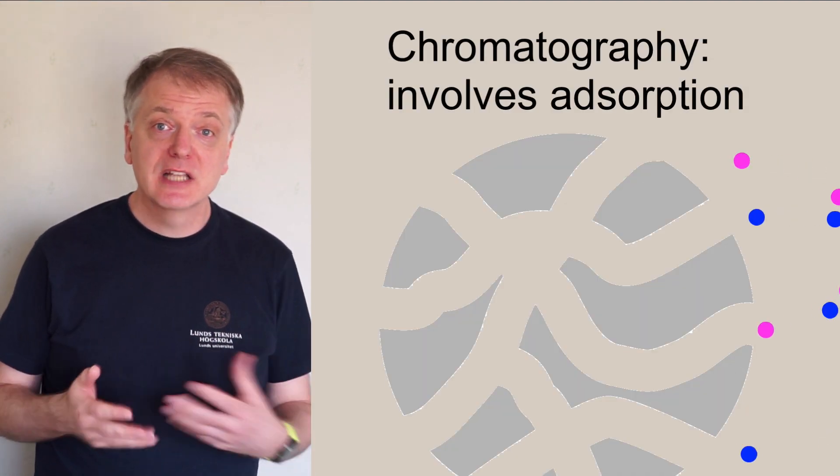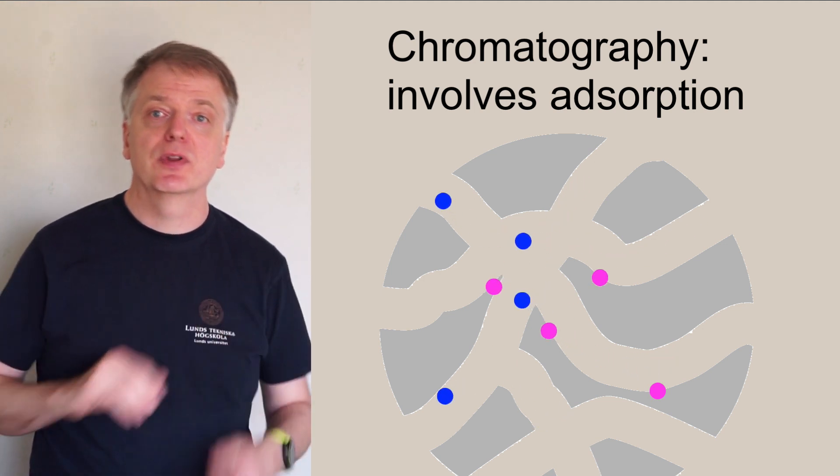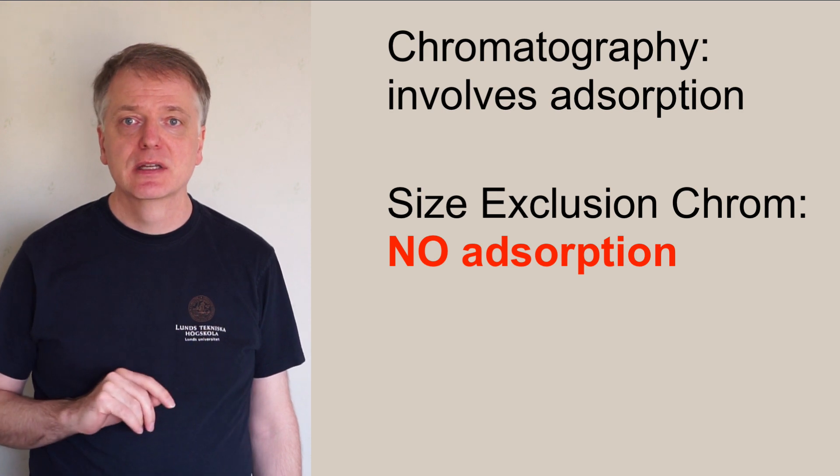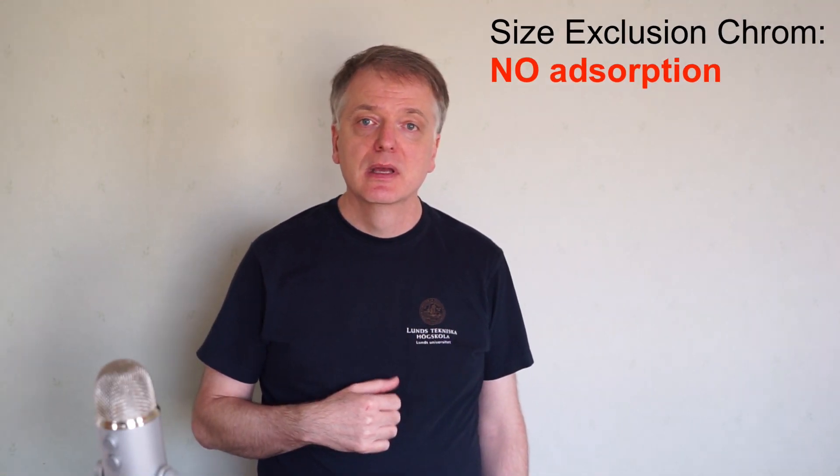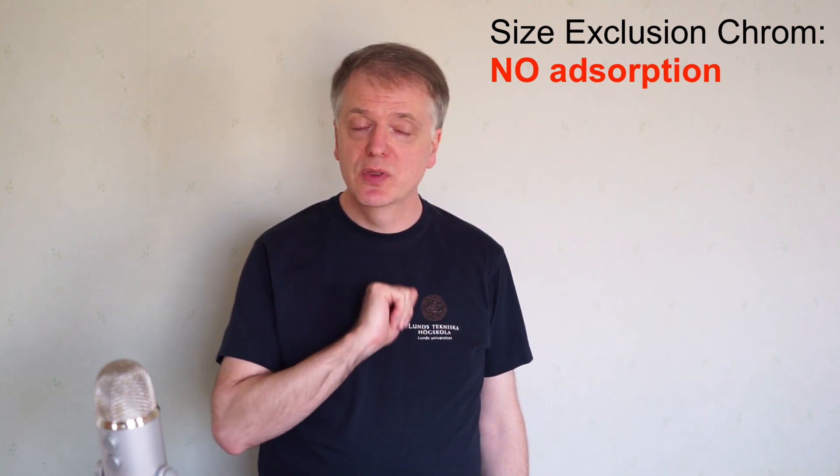In previous videos we talked about chromatography as a process where an adsorbate is adsorbed to the surface of an adsorbent. However, that is not the case in size exclusion chromatography. In size exclusion chromatography there is no interaction at all between the molecules and the surface of the porous particles—no adsorption, no nothing.